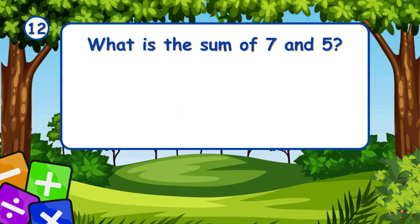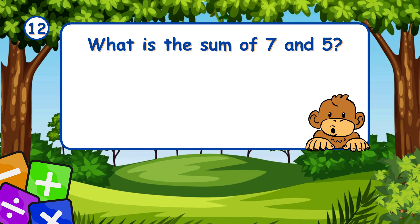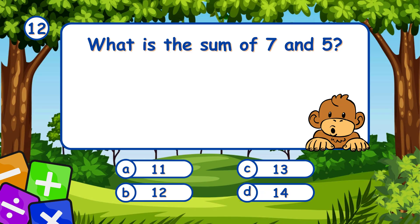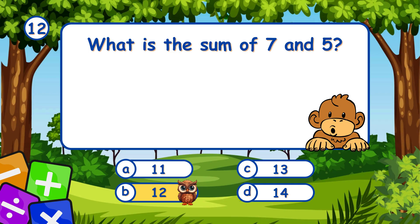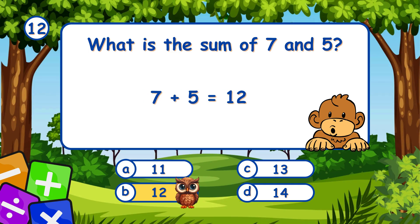What is the sum of 7 and 5? It's B, 12. Adding 7 and 5 gives 12.